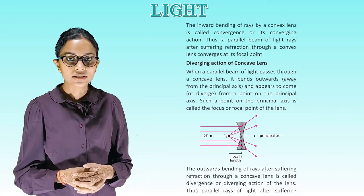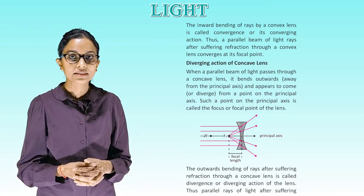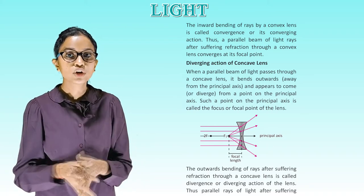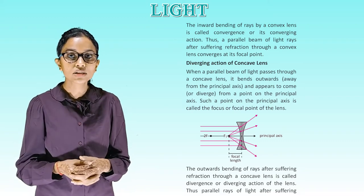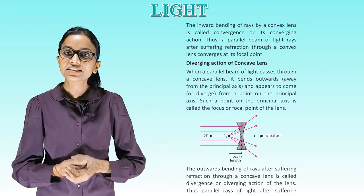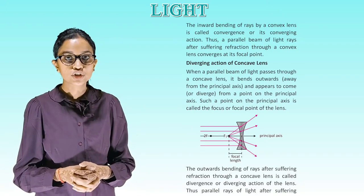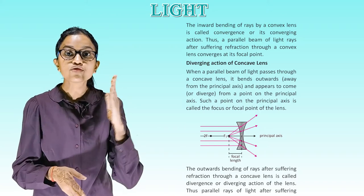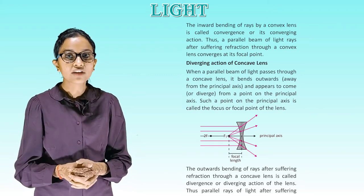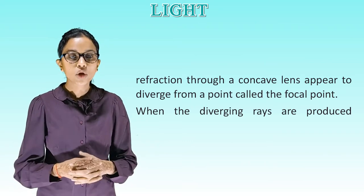Diverging action of a concave lens: when a parallel beam of light passes through a concave lens, it bends outward away from the principal axis and appears to come from a point on the principal axis. Such a point is called the focus or focal point of the lens. This diagram illustrates this — please try to understand it. The outward bending of rays after passing through a concave lens is called divergence or the diverging action of the lens. Thus, parallel rays after passing through a concave lens appear to diverge from a point called the focal point.